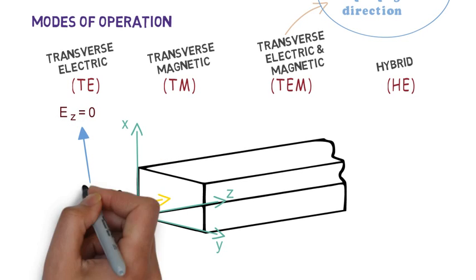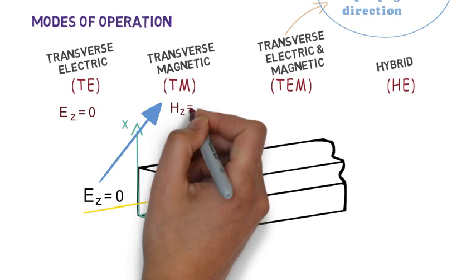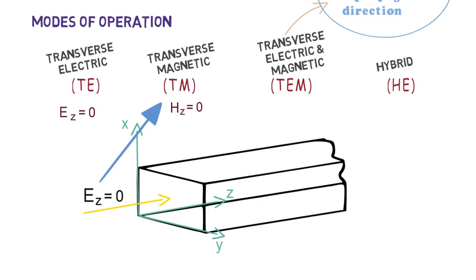On the other hand if magnetic field is zero in the propagation direction then this is called transverse magnetic mode. Here only x and y component of magnetic field will exist and when both electric and magnetic field becomes zero in z direction then this mode is known as TEM mode.